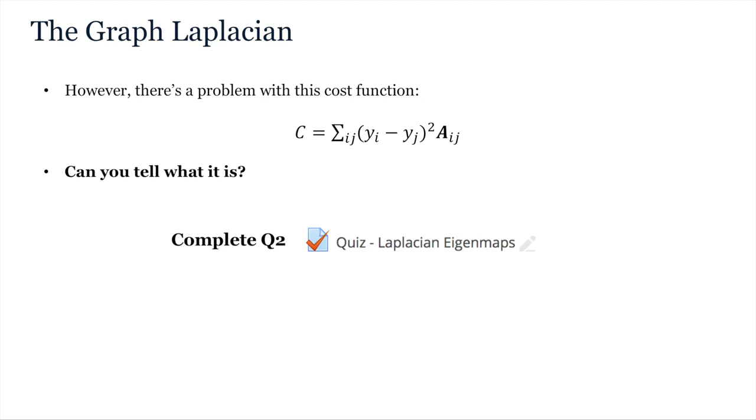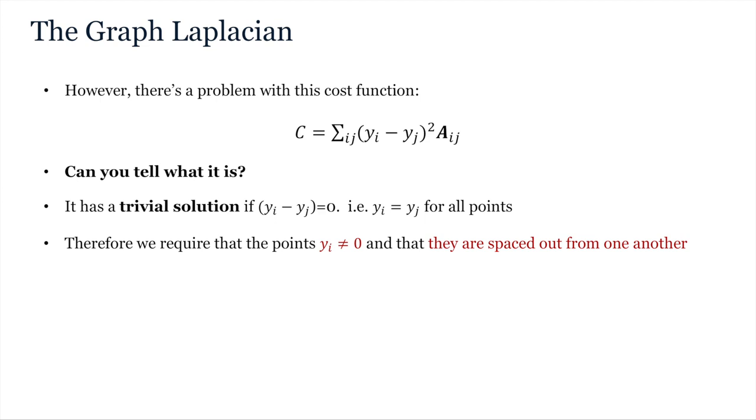So the issue is that there are trivial solutions where all points get mapped to the same point in space, either 0 or some other location where Yi equals Yj. This we do not want. But what has this got to do with the Laplacian?